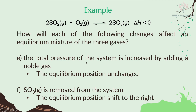E: The total pressure of the system is increased by adding a noble gas — that is, an inert gas is added to the system. Since the inert gas does not react with any of the gases in the system, the equilibrium position remains unchanged.